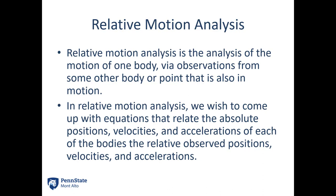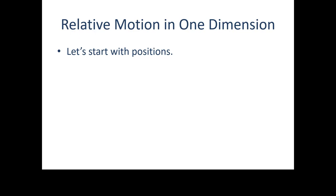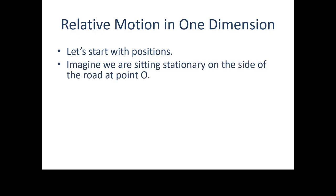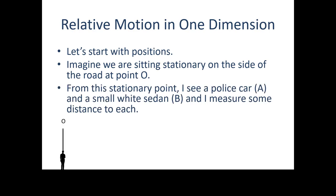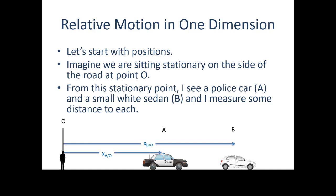So how do we relate the absolute positions — my position, the other particle's position — and how do we relate that to the relative position, relative velocity, relative acceleration that I'm observing from my moving platform? I'll start with one dimension. Starting with positions, imagine we're sitting stationary on the side of the road at some point O. From that stationary point I see a police car A and some small white sedan B, and I can measure a distance to each one. The distance of the police car is X_A with respect to O, and the position of the white sedan is X_B with respect to O, each a single dimension.